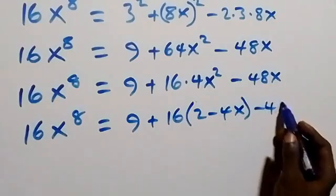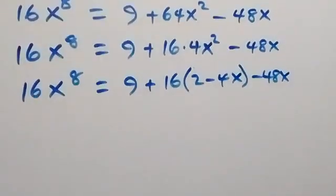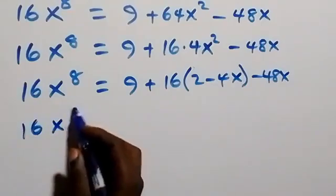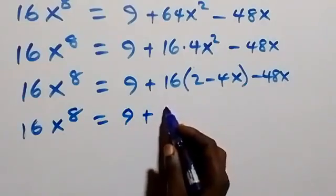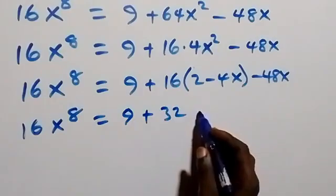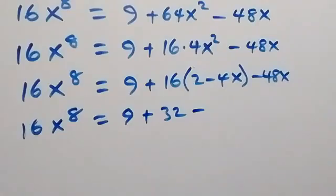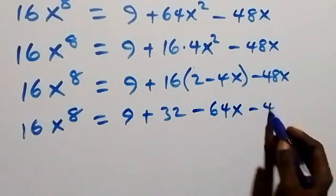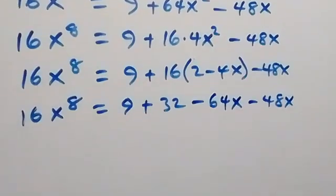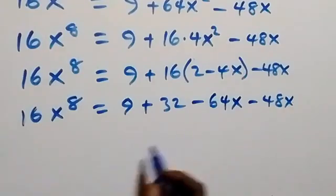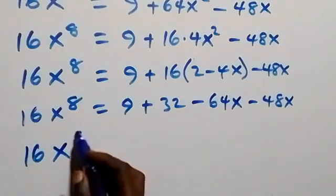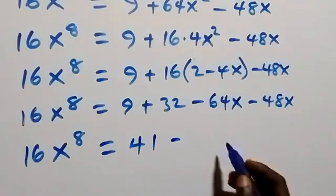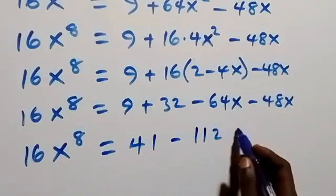Opening the bracket, 16 times 2 is 32 and 16 times 4x is 64x. So we have 16x⁸ equals to 9 plus 32 minus 64x minus 48x, which gives us 16x⁸ equals to 41 minus 112x.